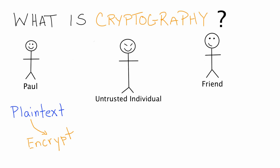So what Paul needs to do is he needs to encrypt his message before he sends it. So what does it mean to encrypt a message? Let's pretend like Paul's secret message is the word 'fun'. He doesn't want anybody other than his friend to read this secret message. Well, anybody that speaks English can read the letters F-U-N and understand that Paul is trying to send the message 'fun' to his friend. So in order for Paul to encrypt the plain text 'fun', he converts the letters F-U-N to numbers. Then once his message is in numerical form, he can use a key to modify the values of this number.